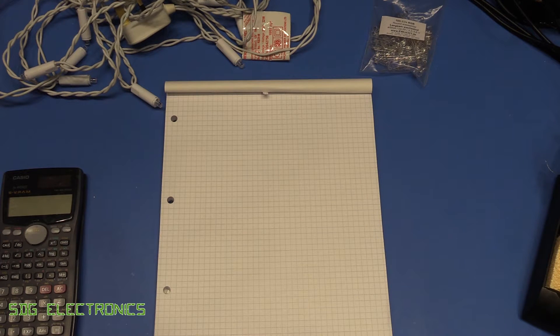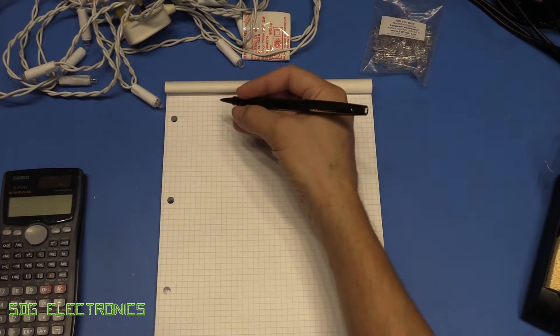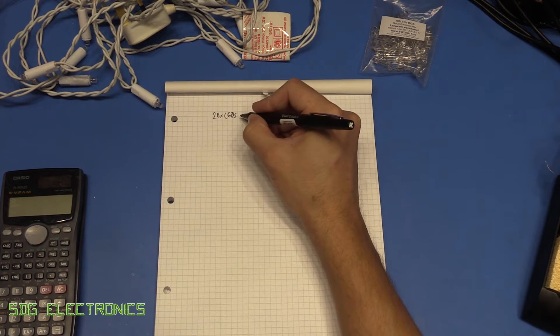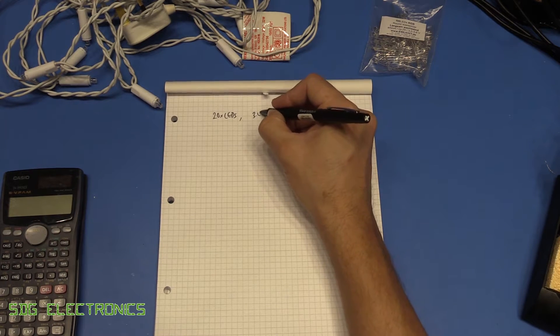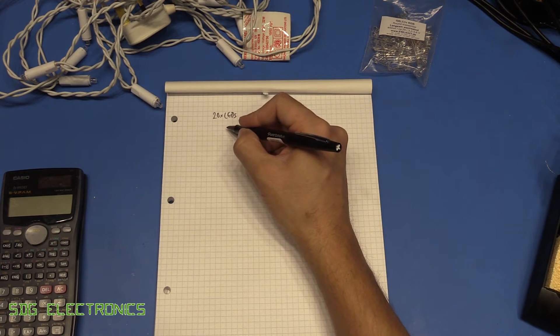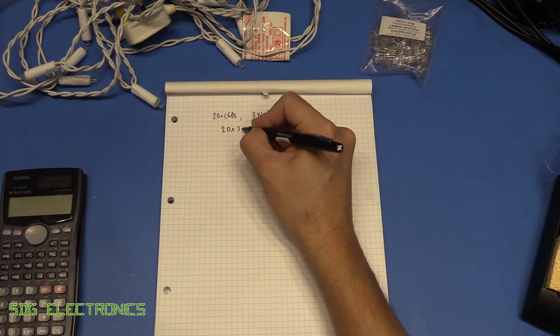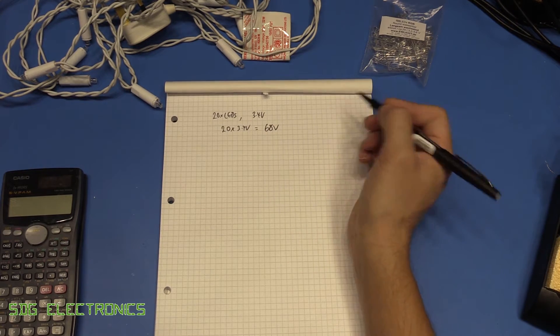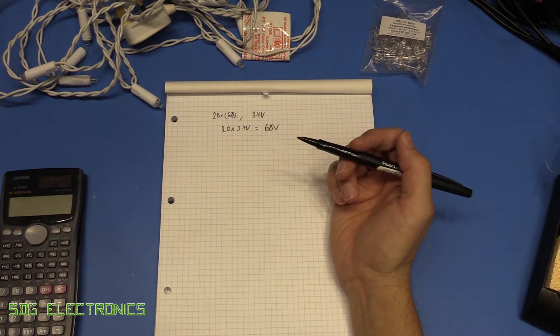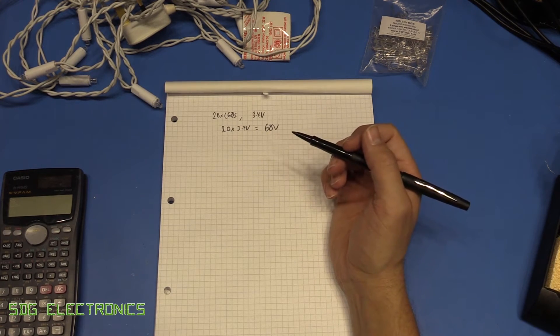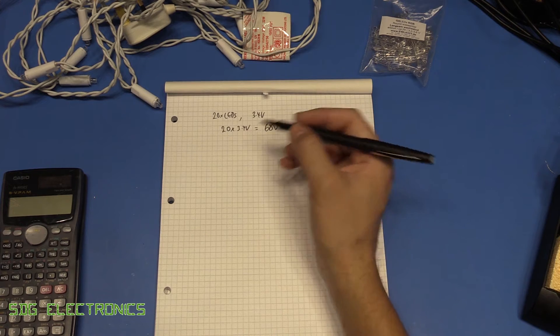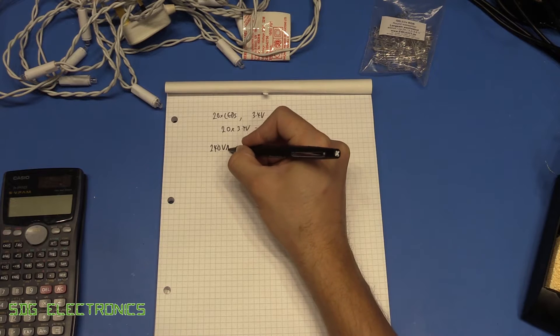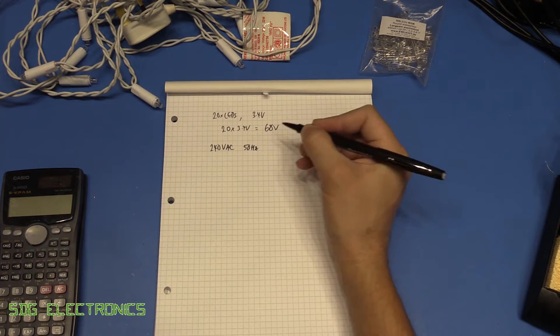Right, so next we need to design an LED driver so that we can plug these into the mains. So what we've got is 20 LEDs, and each has a forward voltage somewhere in the region of 3.4 volts. So 20 times 3.4 volts, because they're all in series, is about 68 volts. And I think what we'll do is just design a simple capacitive dropper, rather than anything else more fancy. So we will have our incoming mains supply, which is nominally somewhere in the region of 240 volt AC in the UK at 50 hertz.